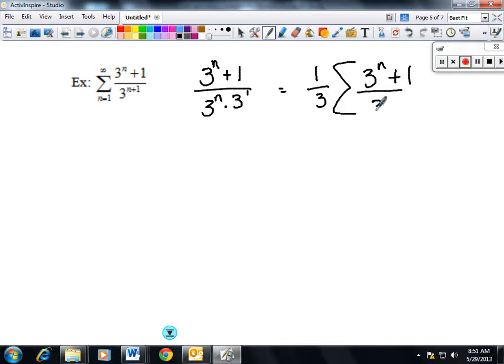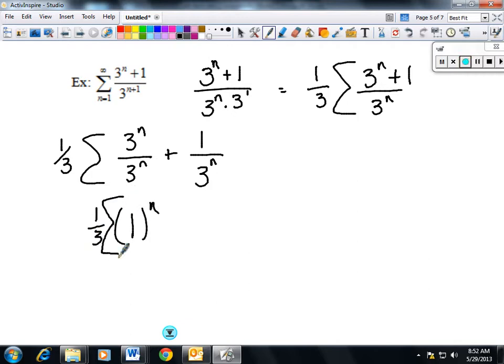3^(n+1) over 3^n. I can then distribute my 3^n up and that's 1/3 times the series of 3^n/3^n plus 1/3^n. Well, this is just 1^n plus (1/3)^n.